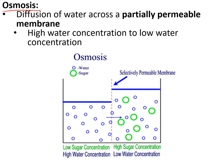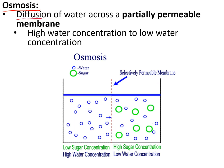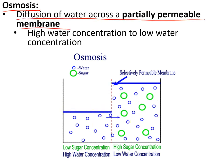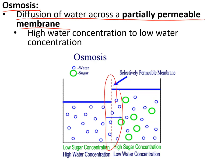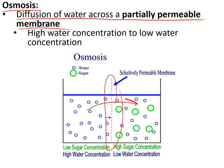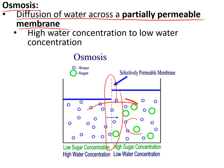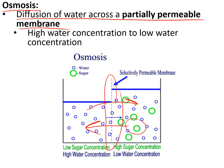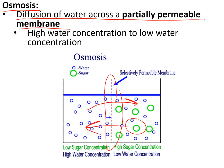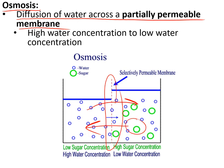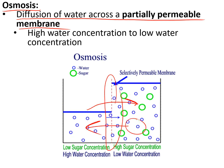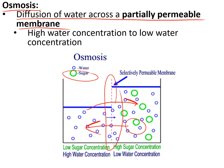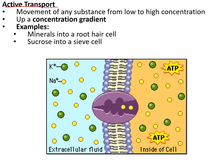Osmosis is how water enters and leaves cells. It is the diffusion of water across a partially permeable membrane — one with small holes small enough for water to pass through but too small for dissolved substances like sugar. Water diffuses from high concentration to low concentration down a concentration gradient. The concentration of water is higher wherever the concentration of solute is lower.